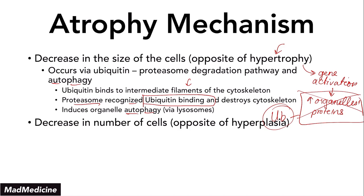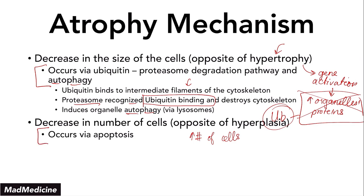When talking about undoing the effects of hyperplasia, there is essentially one way to do that — via apoptosis. Hyperplasia involves an increase in the number of cells, and there's no way to get rid of extra cells other than destroying them through apoptosis. So these two mechanisms — apoptosis and the ubiquitin-proteasome degradation pathway — are very important. You will be tested on this content.